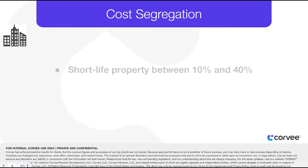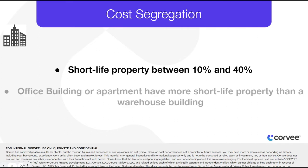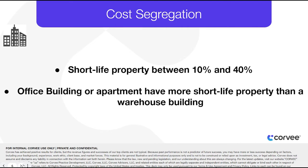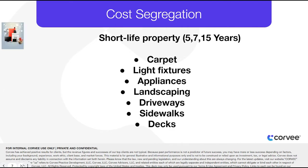An office building or apartment property will usually have more short-life property than a warehouse building. For example, personal property items like carpet, light fixtures, kitchen appliances, landscaping, driveways, sidewalks, decks, and more have shorter class lives — 5, 7, and 15 years.